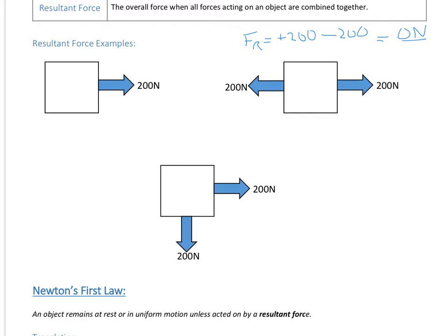Finally, let's have a look at when we've got forces in perpendicular directions. As shown in an alternative video on resolving forces, we can end up with a scenario like this. To deal with this we use a bit of Pythagoras, which means we're going to end up calculating 200 squared plus 200 squared.